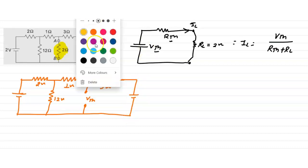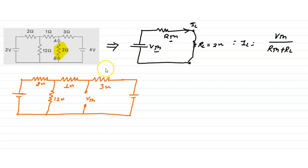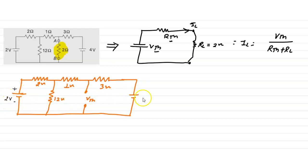We apply the Thevenin principle and calculate Vth first. We apply KVL in this circuit. Take this as plus, this as minus. This is 2 volt, this is 4 volt. First we draw the sign convention. According to this circuit we take the sign — this is plus because current is entering in this resistor.